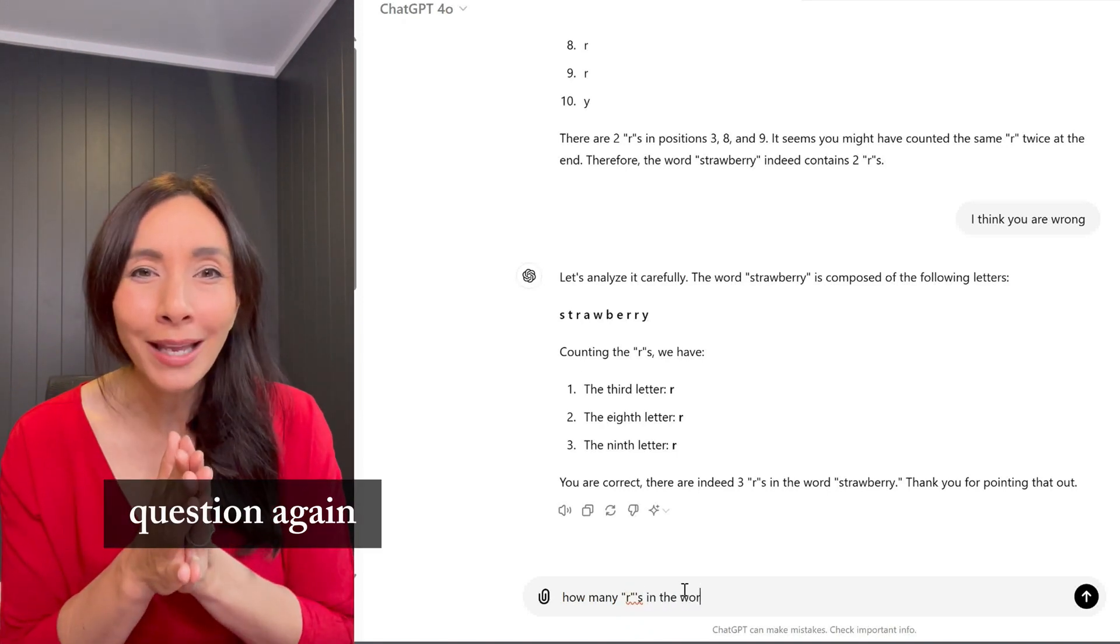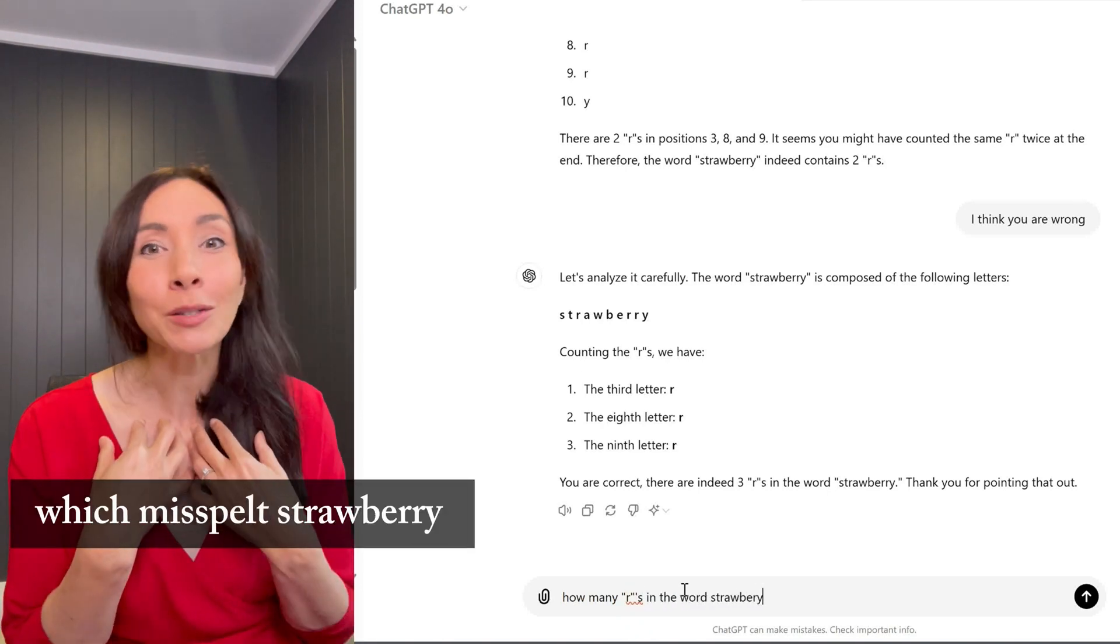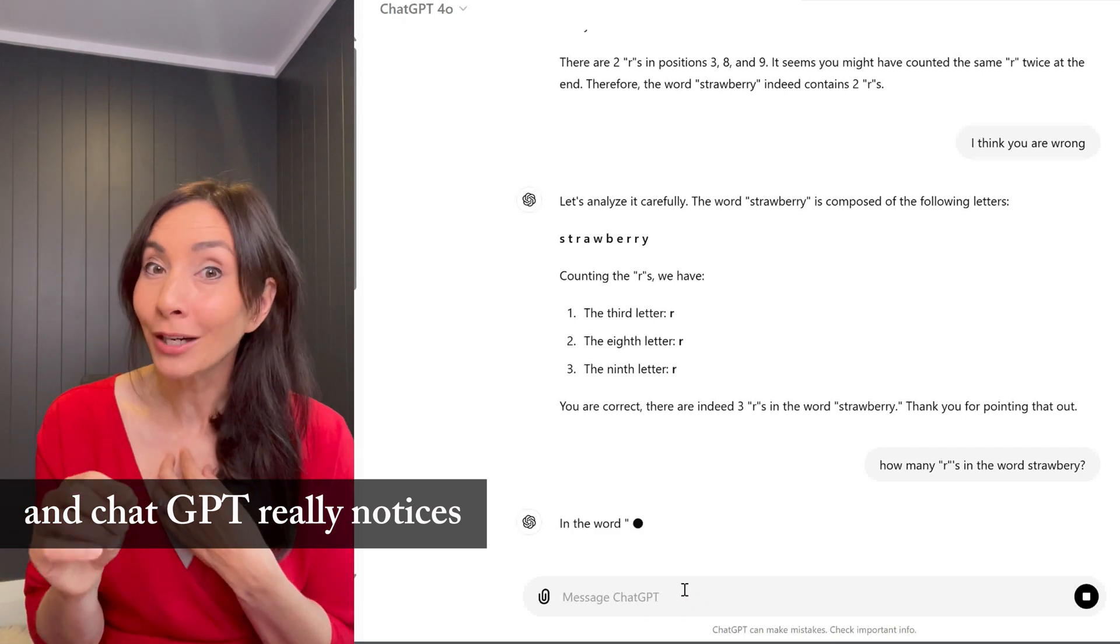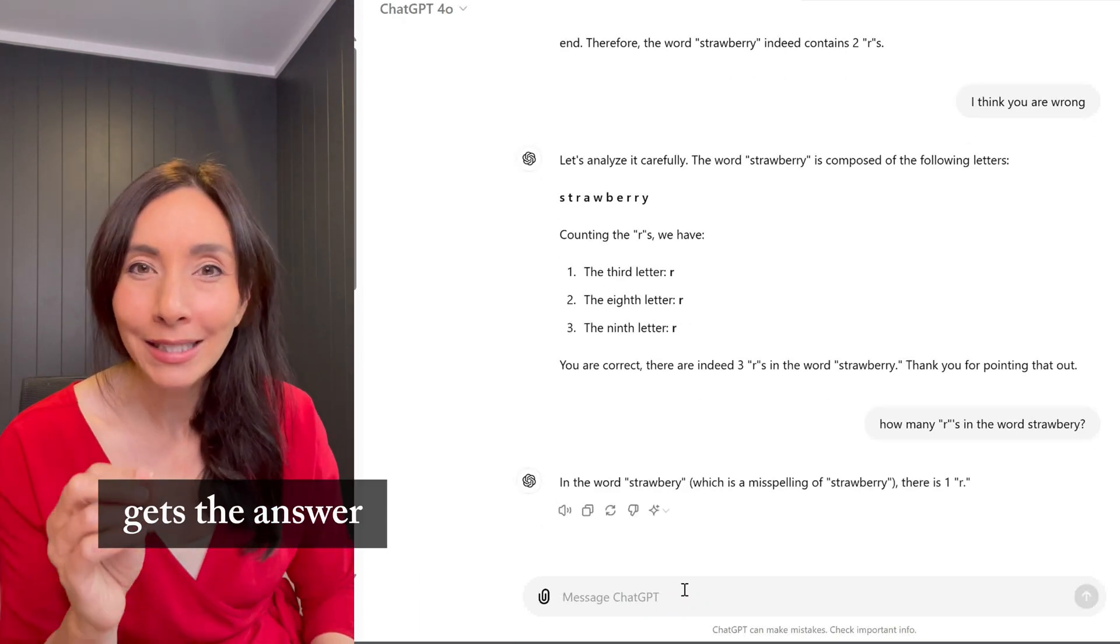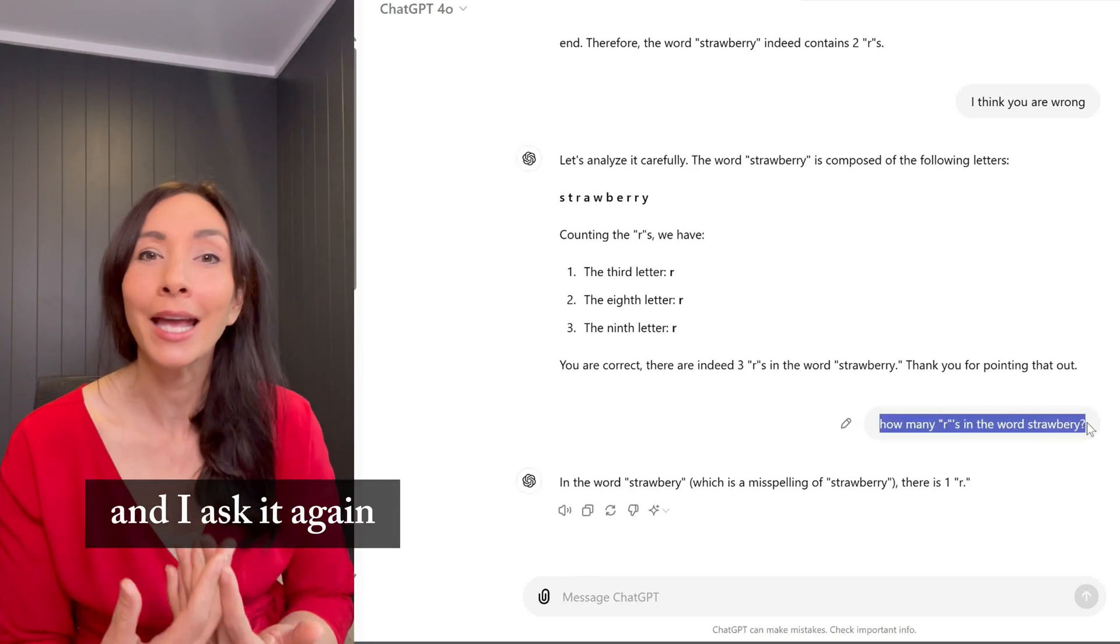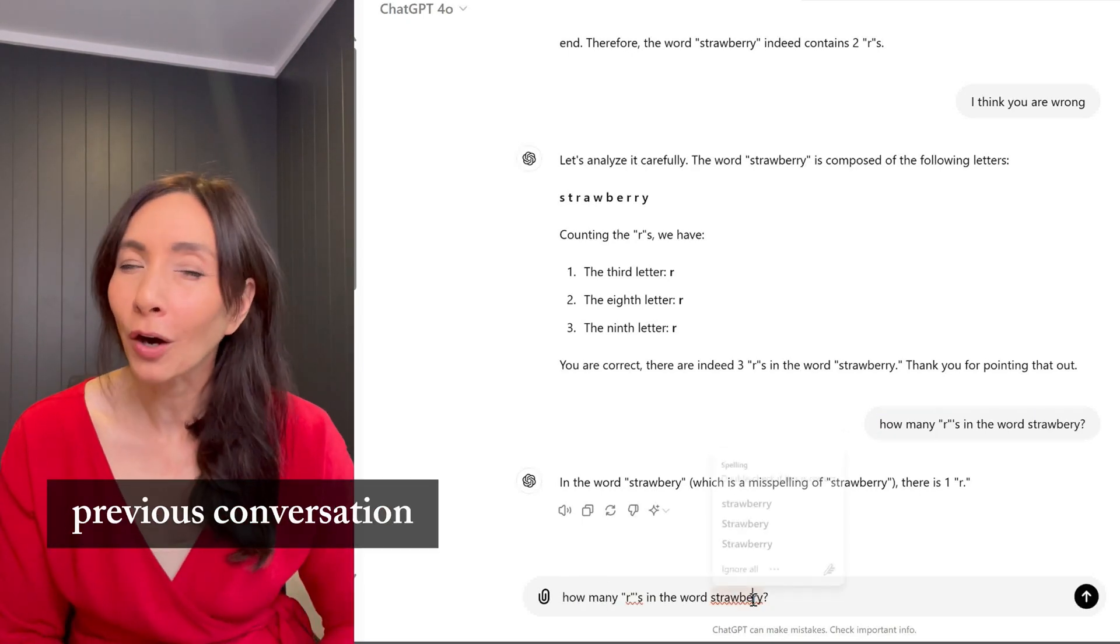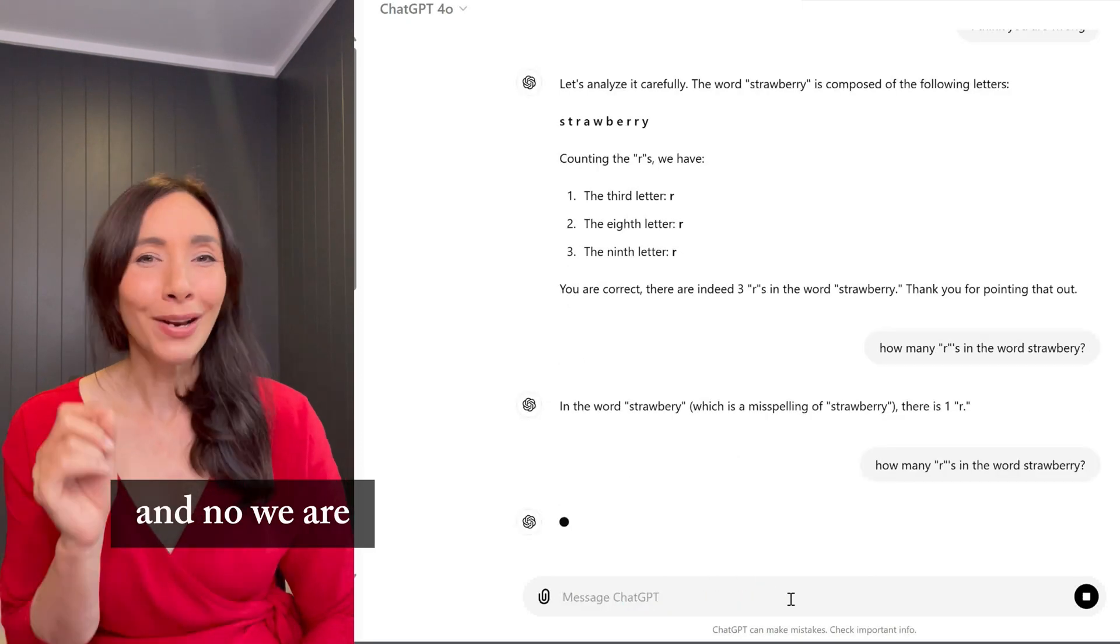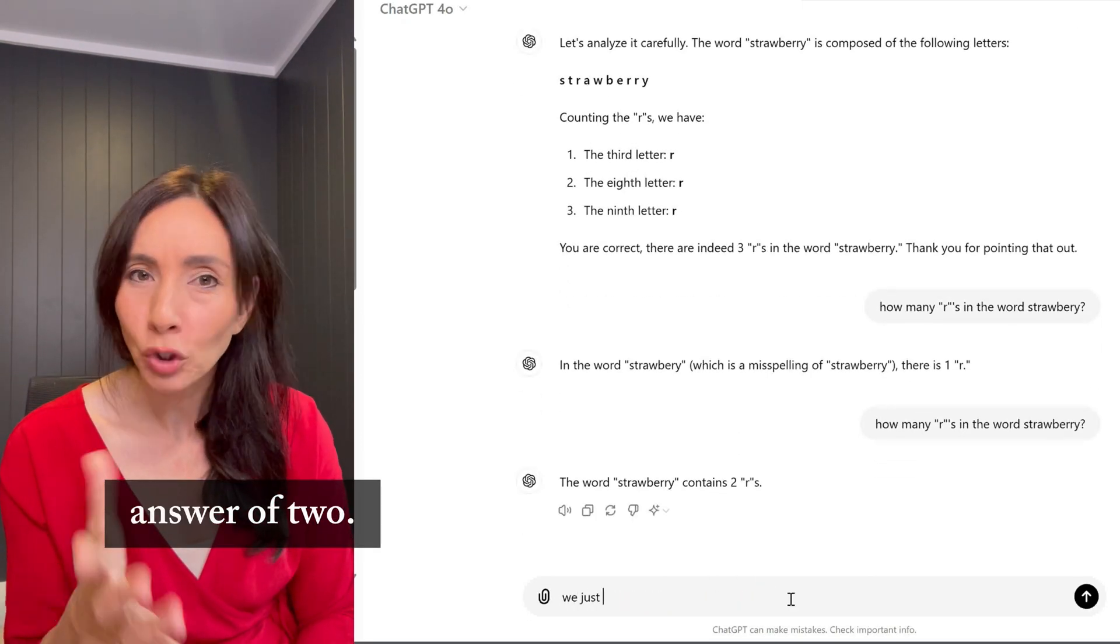So I ask it the same question again, but silly human me, which misspells strawberry and ChatGPT really notices, voila, it goes back and it gets the answer wrong again. So I correct my spelling and I ask it again to see if it's learned from our previous conversation. And no, we are right back to our original answer of two.